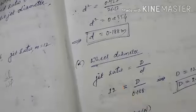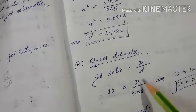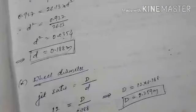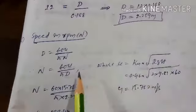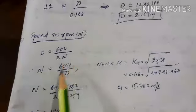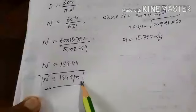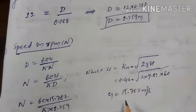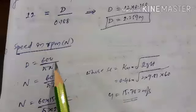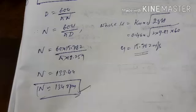Wheel diameter D can be calculated from the jet ratio: D/d = 12, so D = 12 × 0.188 = 2.259 meter. Speed N = 60u / (π·D), where u = Ku × √(2gH). Calculating u and substituting gives N = 134 rpm. So the Pelton wheel runs at 134 rpm.